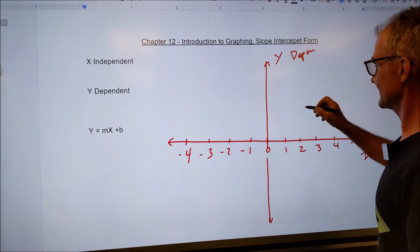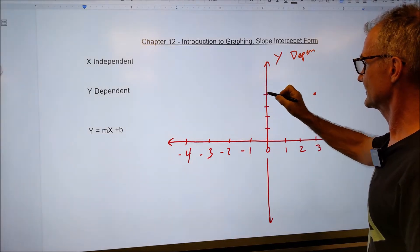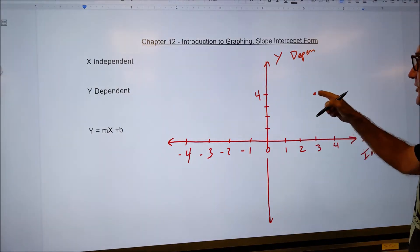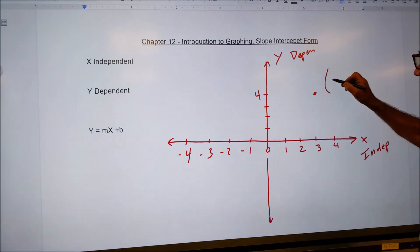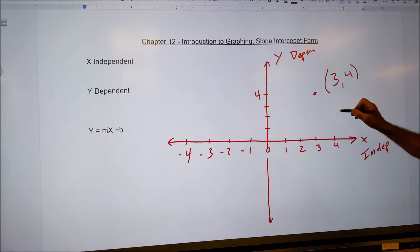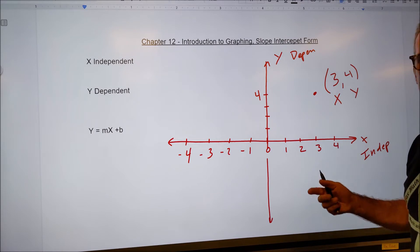I have a value right here. Let's say I go over three and I go up four. That is the ordered pair. You write that ordered pair x first and then y. So that ordered pair is always x, y, just like it is alphabetically.